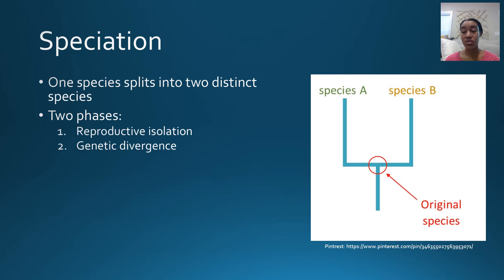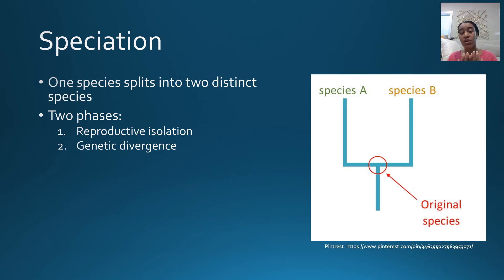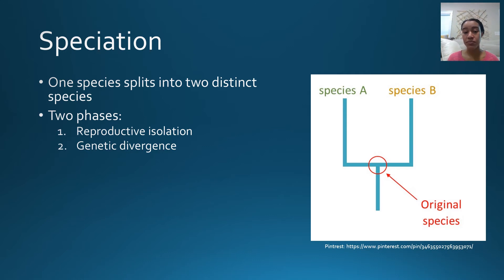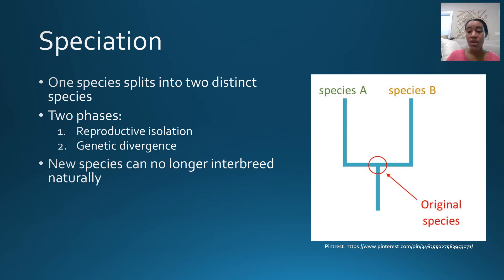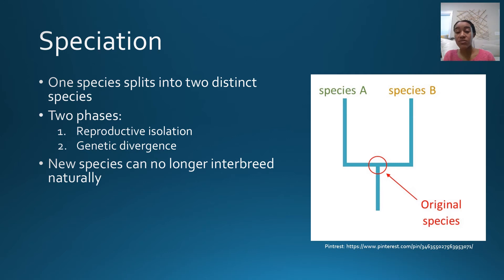Speciation is the process by which we develop new species — when one species breaks off into two distinct species. It occurs in two major phases: first through reproductive isolation, where the two new species begin to not be able to interbreed, and then as time goes on they start to diverge, developing more differences until we end up with two very distinct species. These further genetic divergences might result in different phenotypes, like we can see with Darwin's finches. The original species is shown as a node that over time branches into two distinct species that can no longer interbreed naturally.